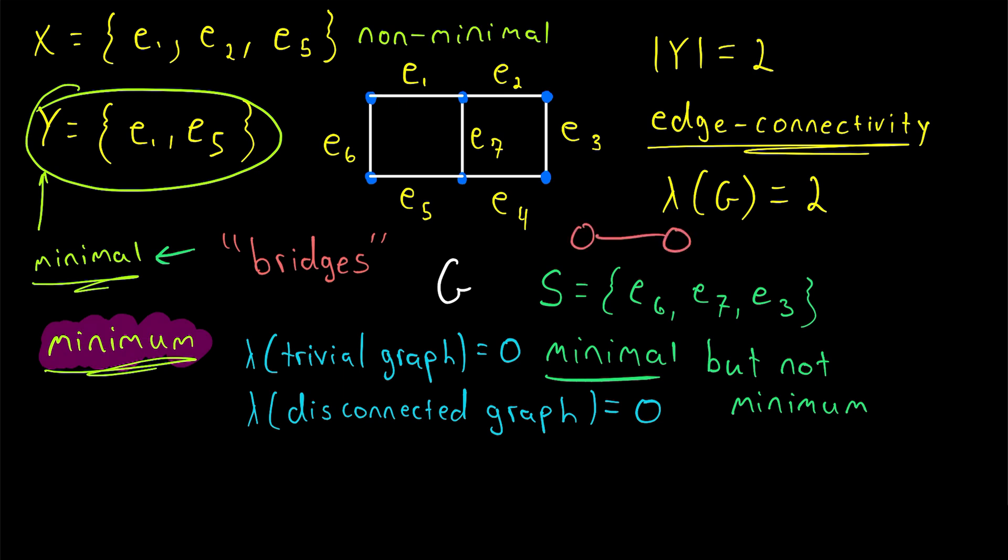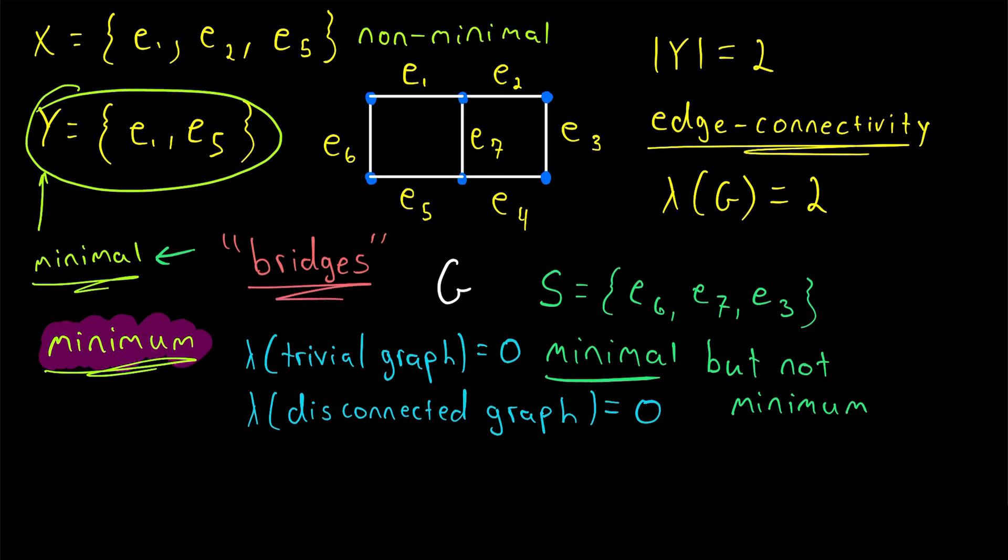A bridge is basically a single edge that, when deleted, disconnects the graph or the component it belongs to. And interestingly, bridges have a very close connection to cycles. So check that out. Links in the description, if you're interested.